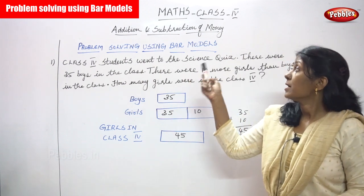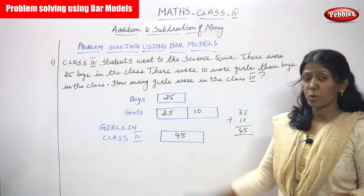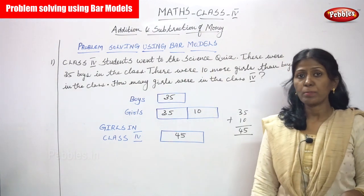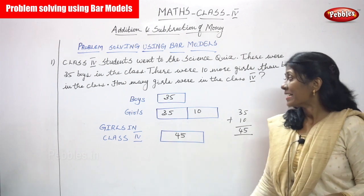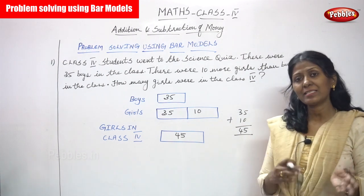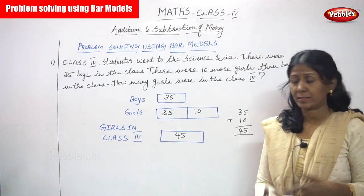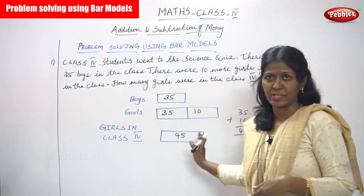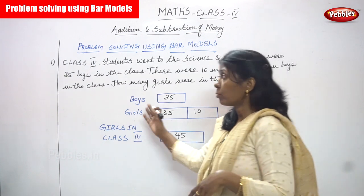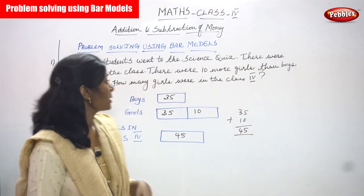Now, we are going to see problem solving using bar models. It is combined addition as well as subtraction both together, but this sum is only addition. Now look at the sum — we are going to solve this.